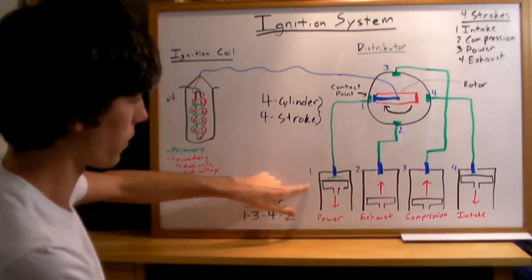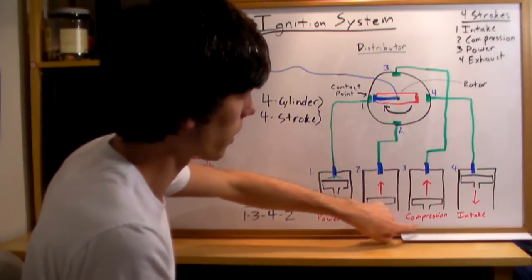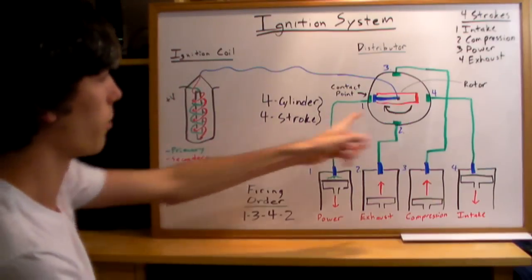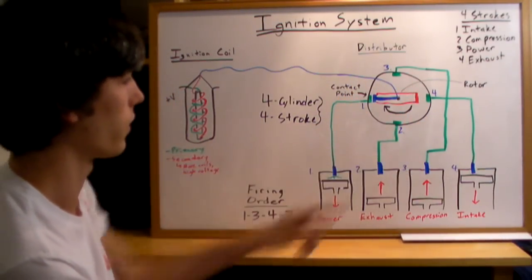The first cylinder will be in power, the second will be in exhaust, the third will be in compression, and the fourth will be in intake. That's so it's all balanced, and as this rotates around, it will fire the different cylinders.